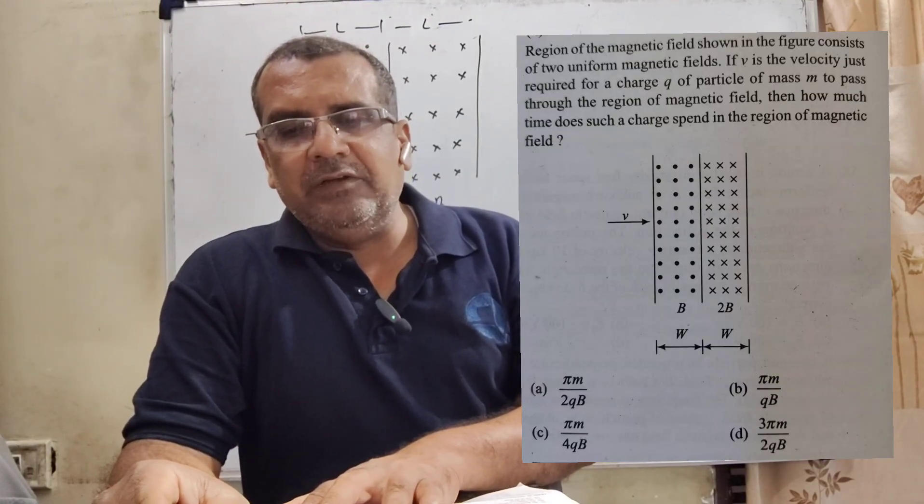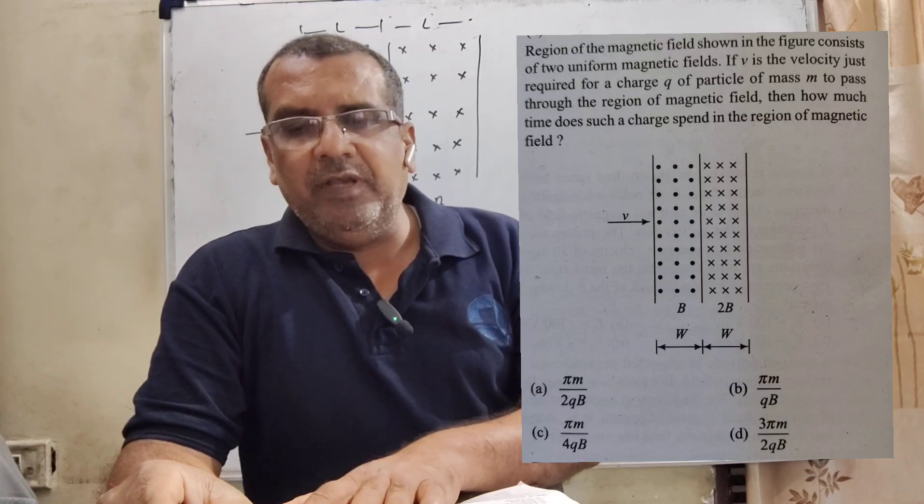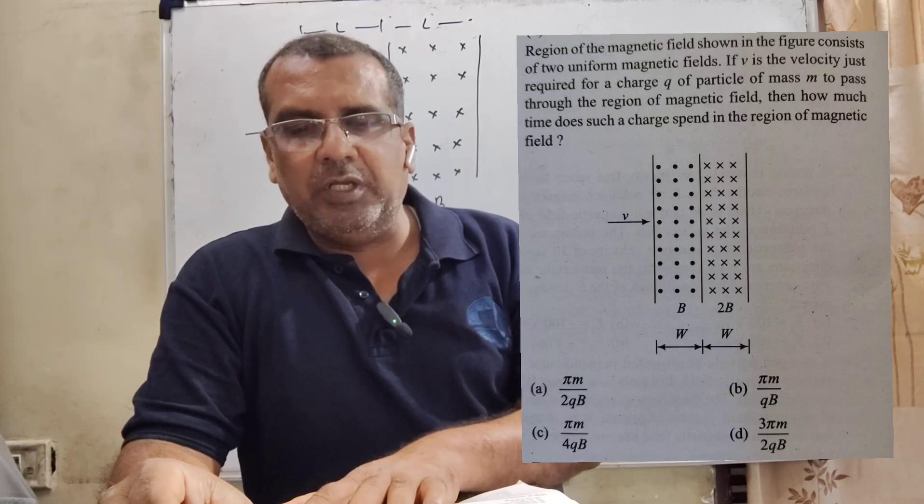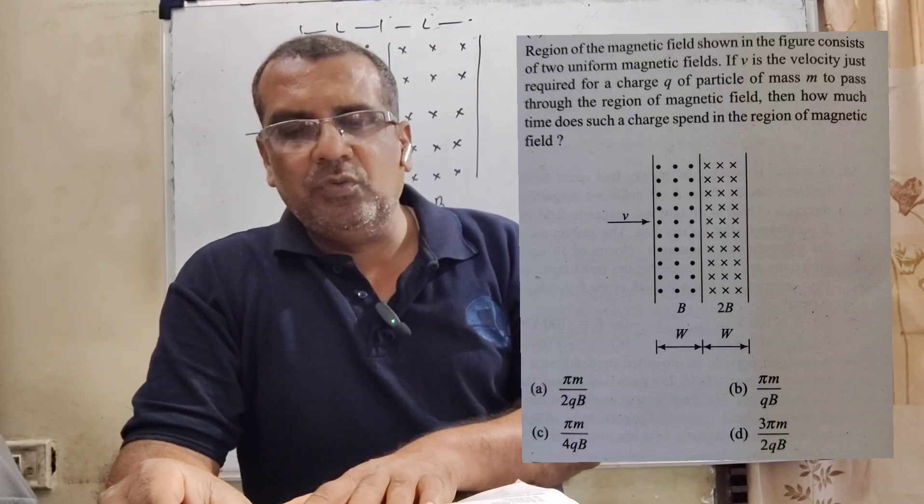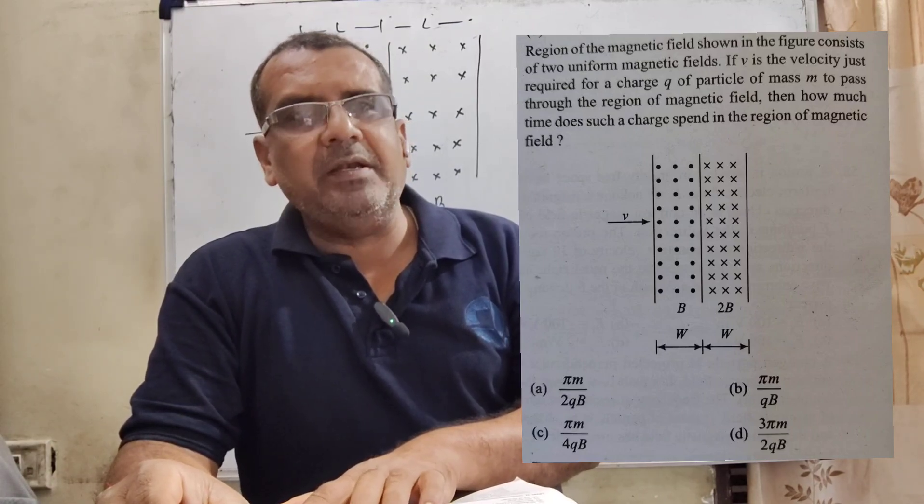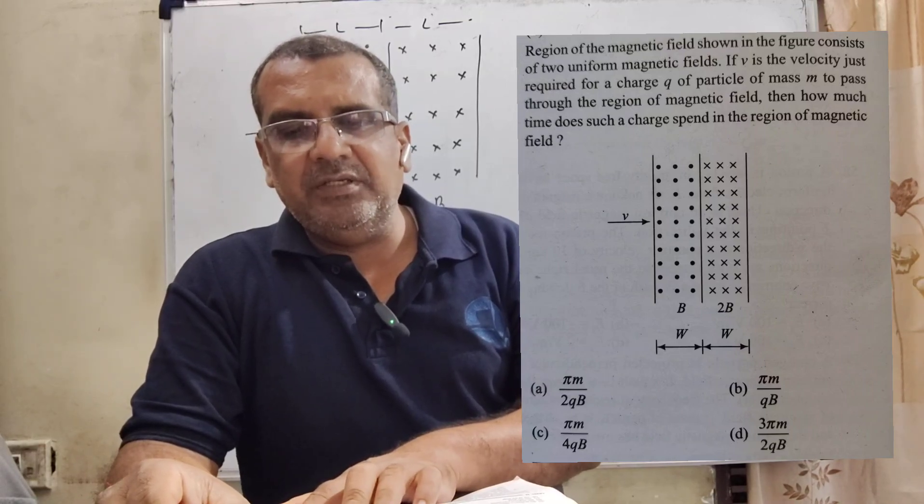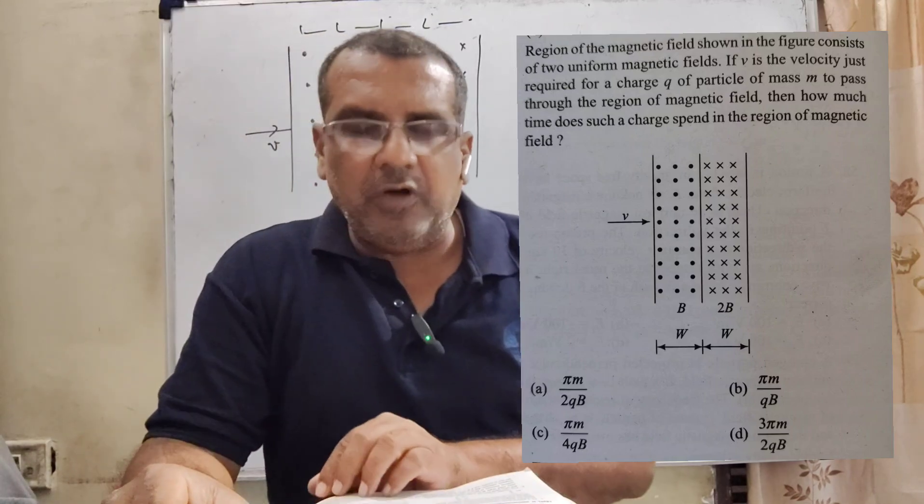Now here is the question. Region of the magnetic field shown in the figure consists of two uniform magnetic fields. If v is the velocity just required for a charge q of particle of mass m to pass through the region of magnetic field, then how much time does such a charge spend in the region of magnetic field? Here we have given four options.